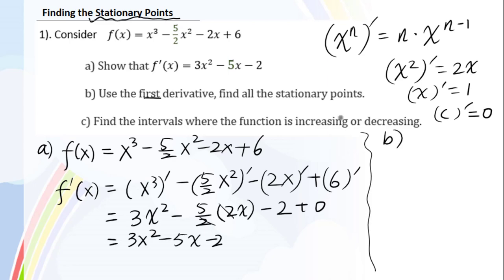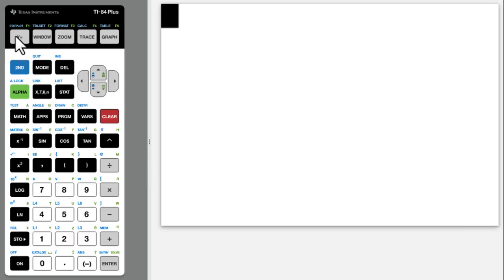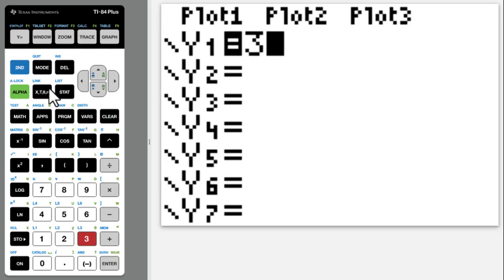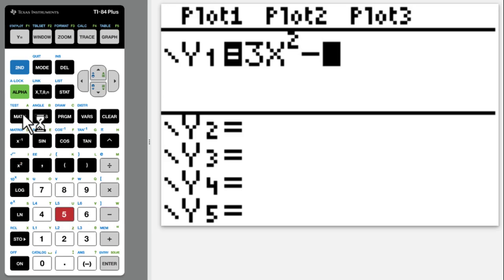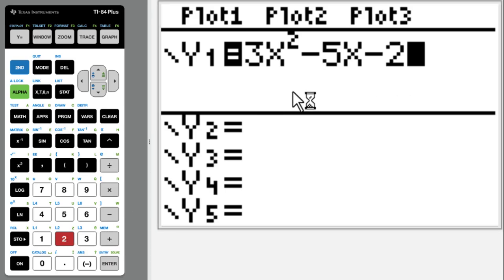Then for b, use the first derivative, which means this function. Find all the stationary points. We will set up f prime of x equals 0. Then by either solver or graphing. Let me use the solver. Go to y equals 3x squared minus 5x minus 2. Since this is a quadratic function, we can use the equation solver.